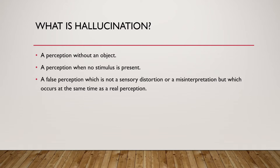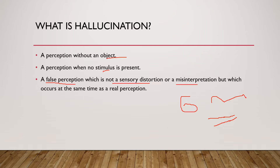When we say it's a false perception, that means it's not real — there is no external object present, no stimulus. It is not a sensory deception or distortion, because in sensory distortion you see something but interpret it differently or it looks slightly different. For example, there is a rope and you might think it is a snake, or there is misinterpretation like rail lines that seem like they are going to join when they never do. That is an example of misinterpretation or distortion.